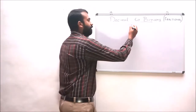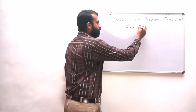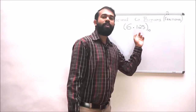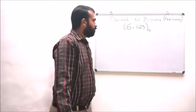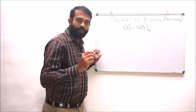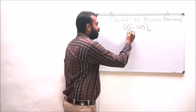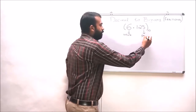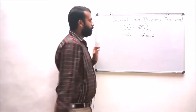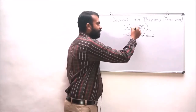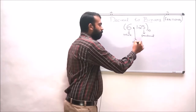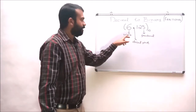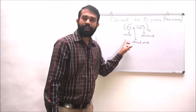For example, let us consider the number 6.125. We have to convert the decimal number 6.125 into its binary equivalent. When we are considering a fractional number, we can see two portions: the whole number portion as well as the fractional portion. These two portions are separated by a decimal point.